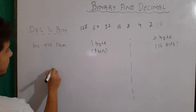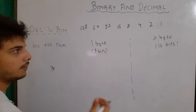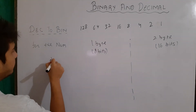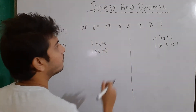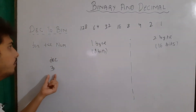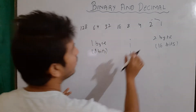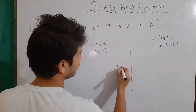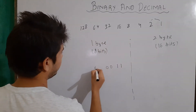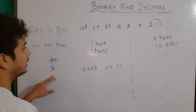Let's say I want to convert 3 to its binary equivalent using 8-bit representation. Using the number formation, we find which numbers add up to 3. Since 2 plus 1 equals 3, those positions get a 1 and the rest are 0. So the 8-bit binary equivalent of 3 is 0 0 0 0 0 0 1 1.